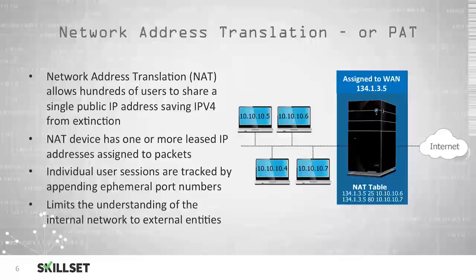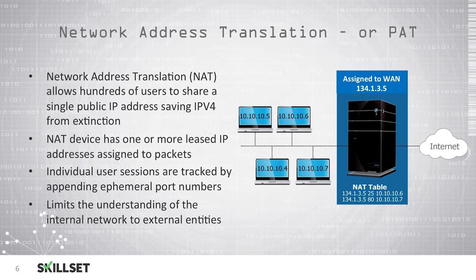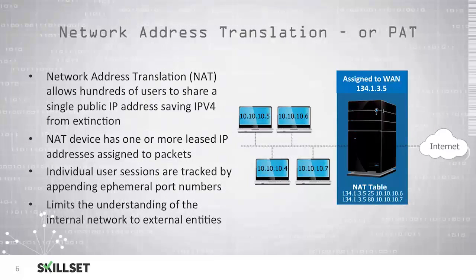Here we can see on the left that we have several devices inside our network using IP addresses beginning with the octet 10, which are private IP addresses not publicly accessible on the internet. We then have one device assigned a public IP address of 134.1.3.5, which allows us to connect to the internet. That device is responsible for keeping track of all traffic from the internal network, forwarding it to the internet on a single IP address, and then receiving traffic on that IP address and forwarding it back to the device that originally requested that communication.